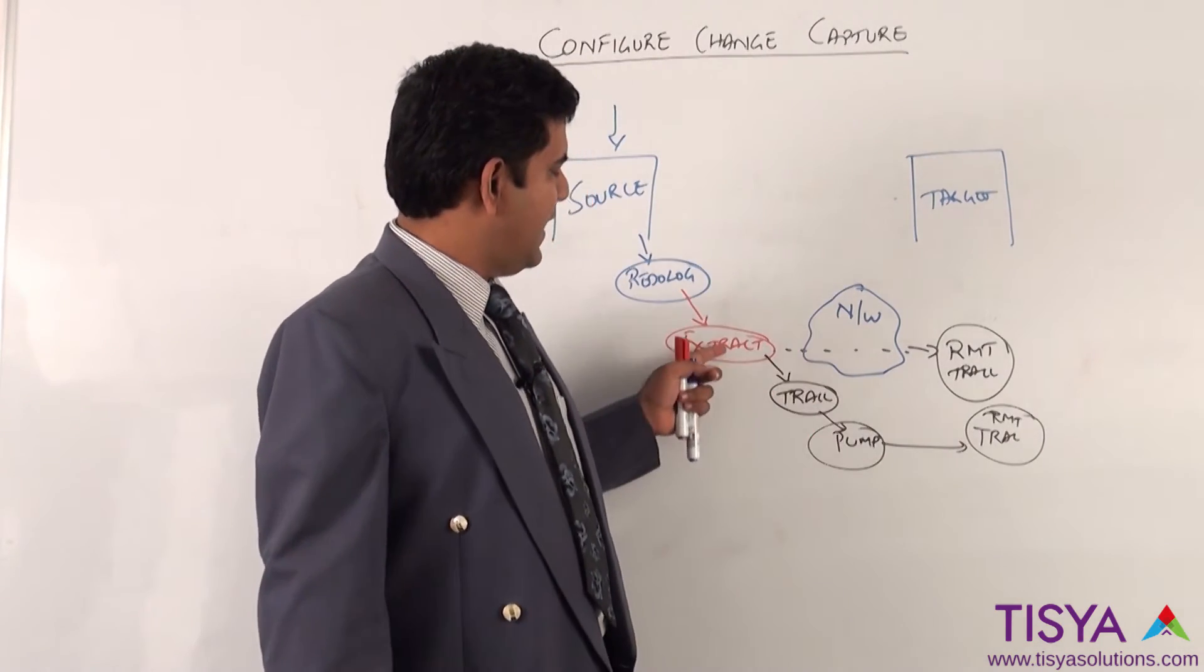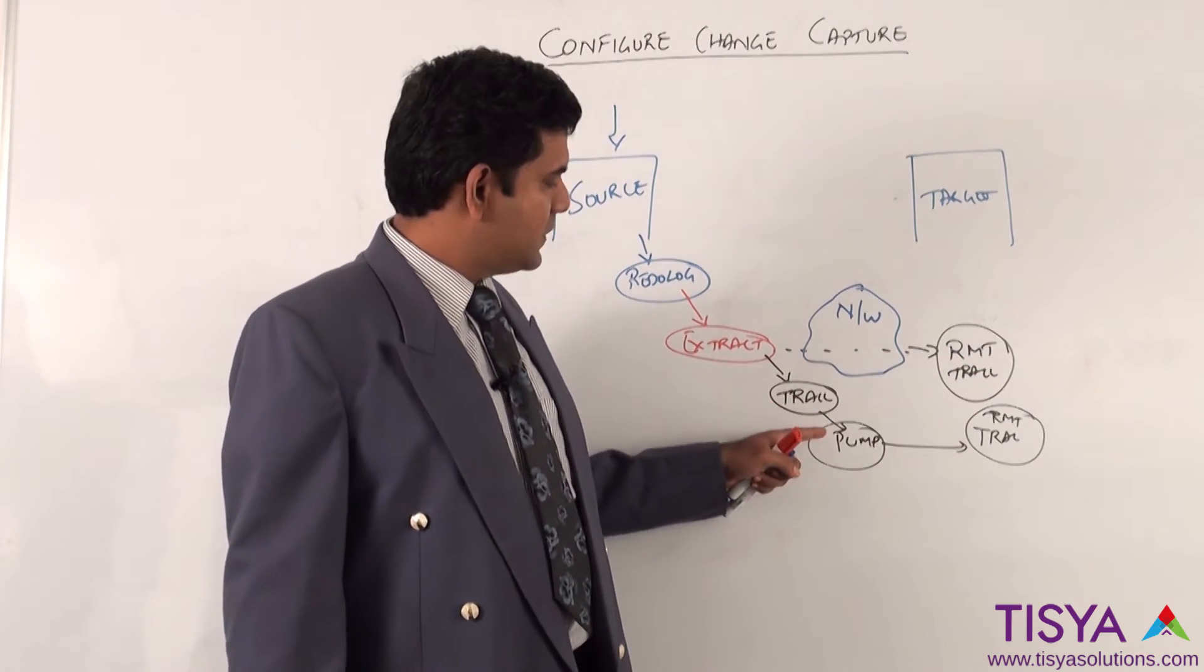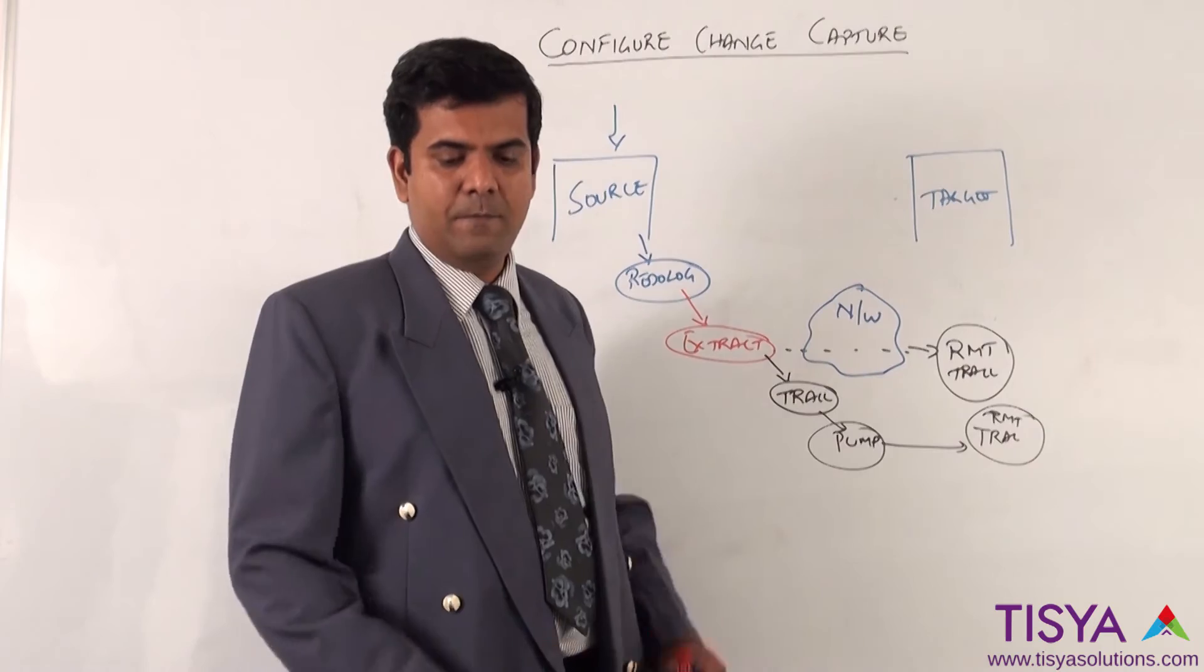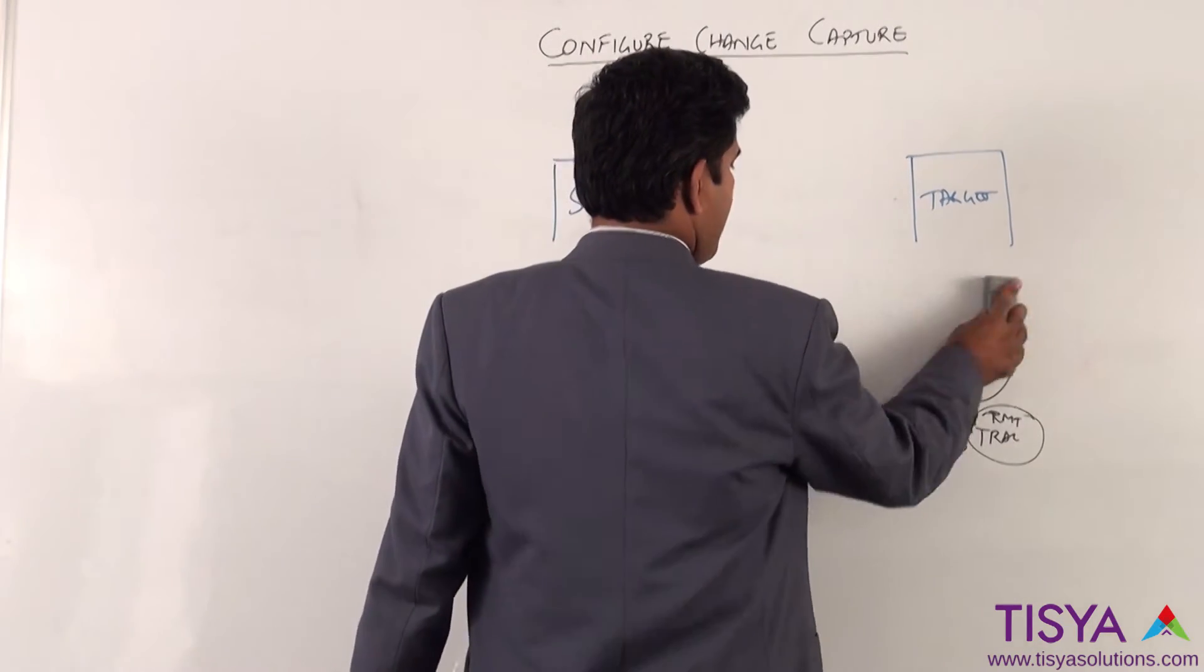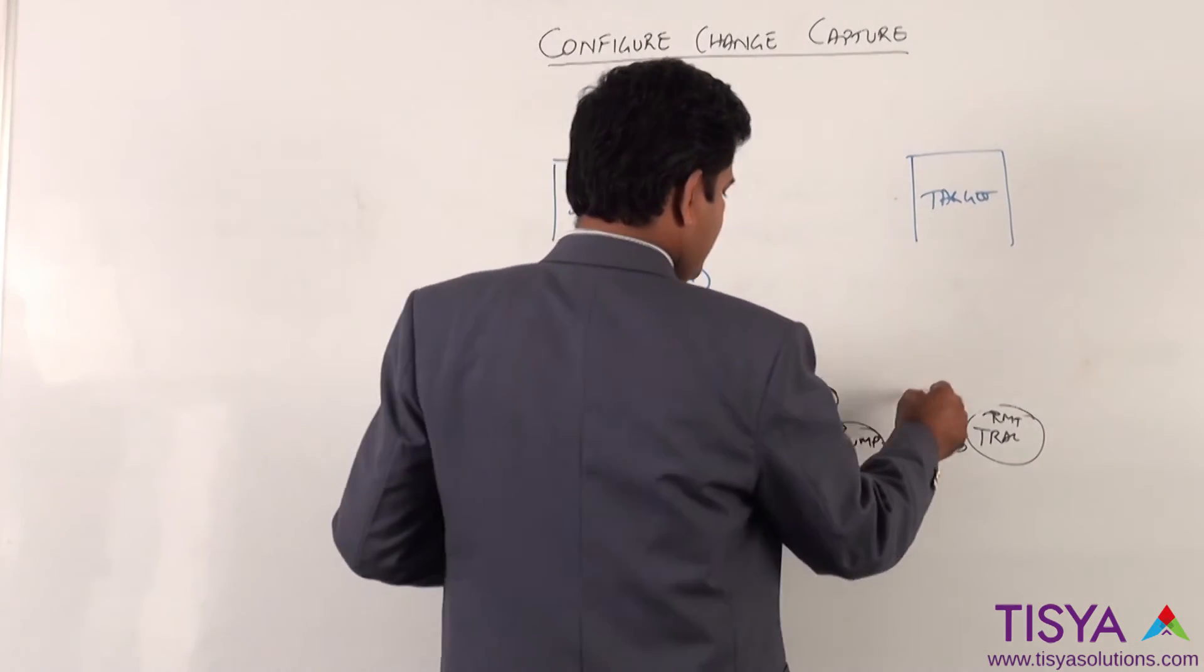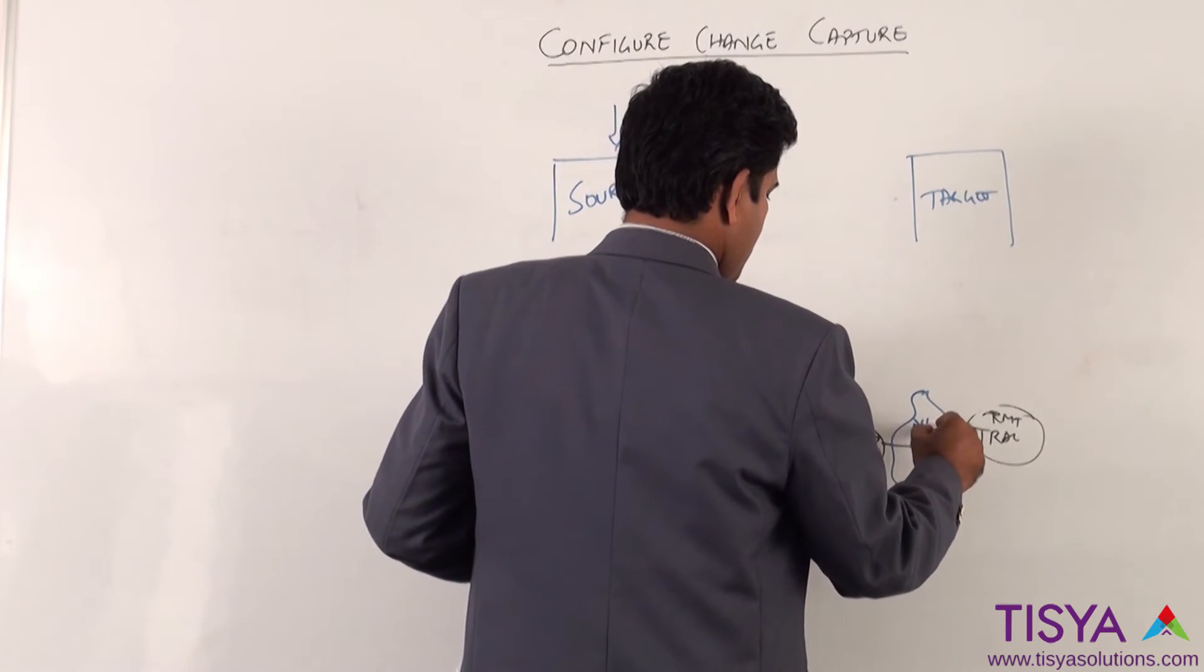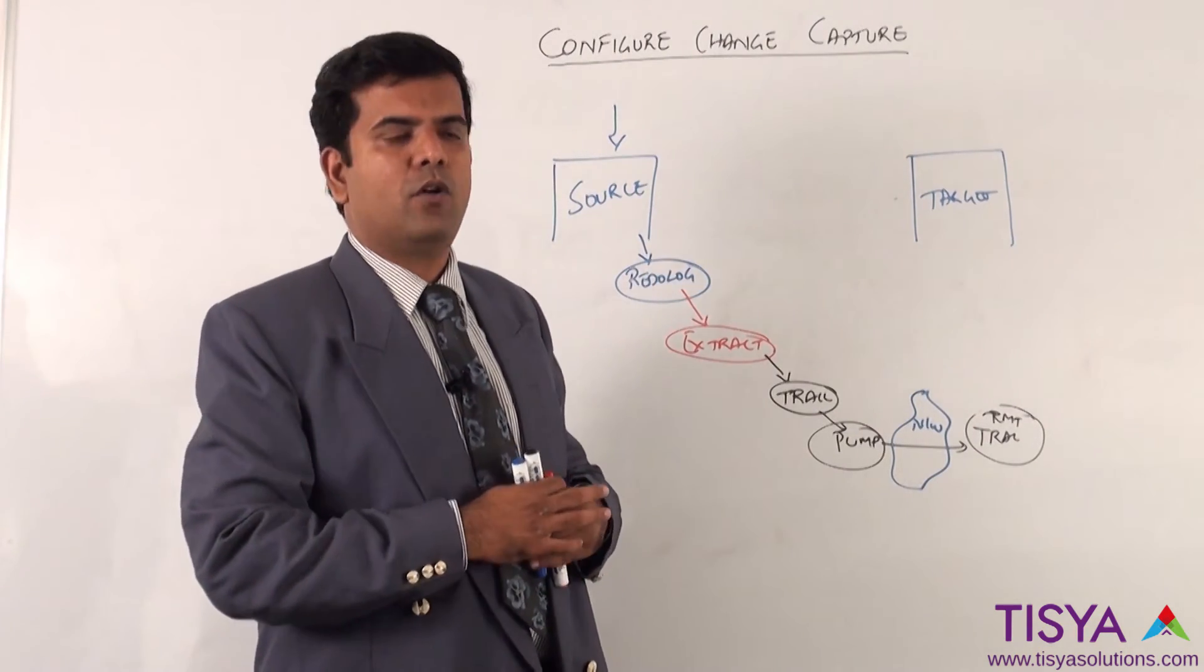We have both options wherein an extract can directly write to a remote trail or write to a local trail and start a pump which will do it. In this example I am going to take the example of using a pump process, which is also a special extract that will write to the remote trail. So it is the pump which would be responsible for sending the data to the remote location.